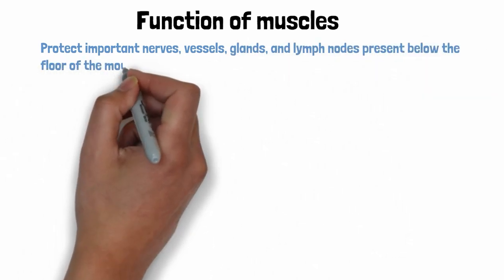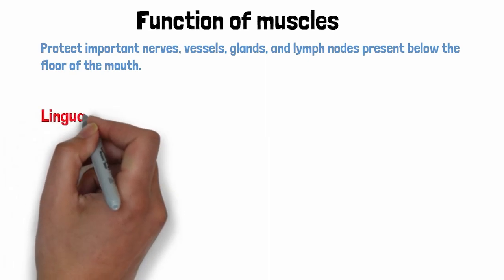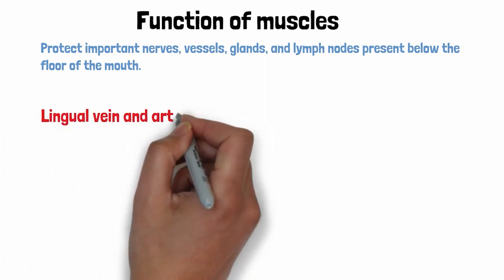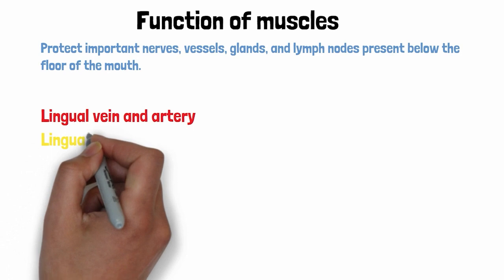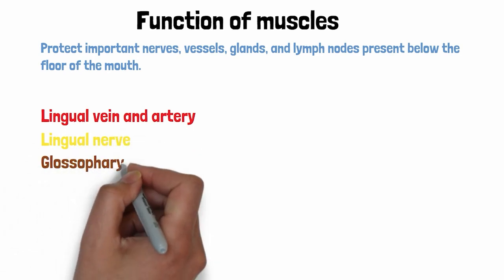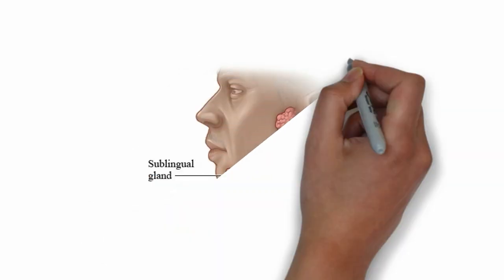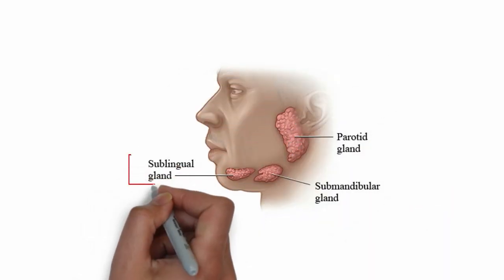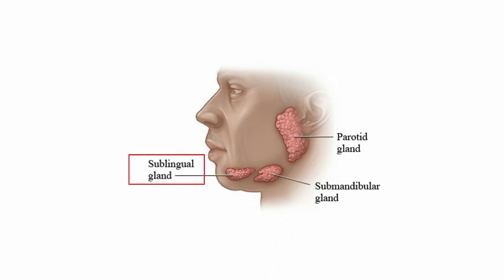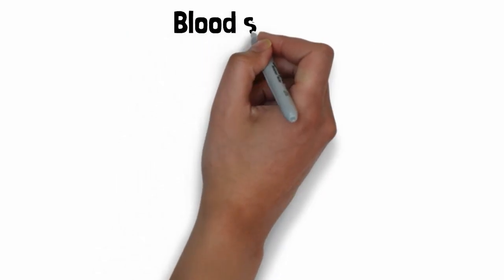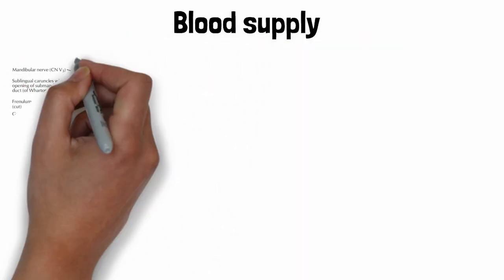Some of these crucial nerves and vessels include the lingual vein and artery, the lingual nerve, the glossopharyngeal nerve, the hypoglossal nerve and various others. The floor of the mouth also contains sublingual salivary glands and the deep lobe of the submandibular gland. More detail on salivary glands will be covered in another video. Finally, let's briefly go through the blood supply of this rich part of the oral cavity, that is the floor of the mouth.